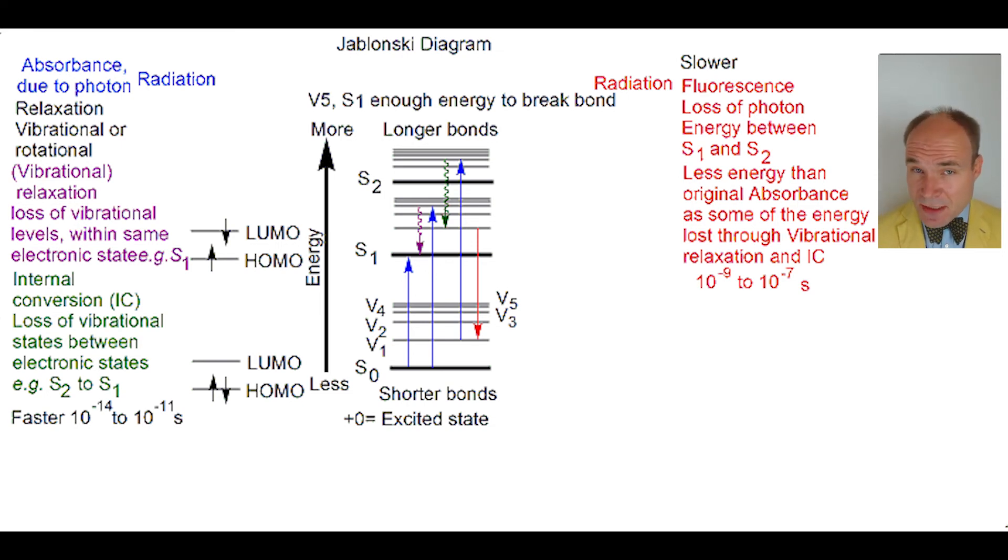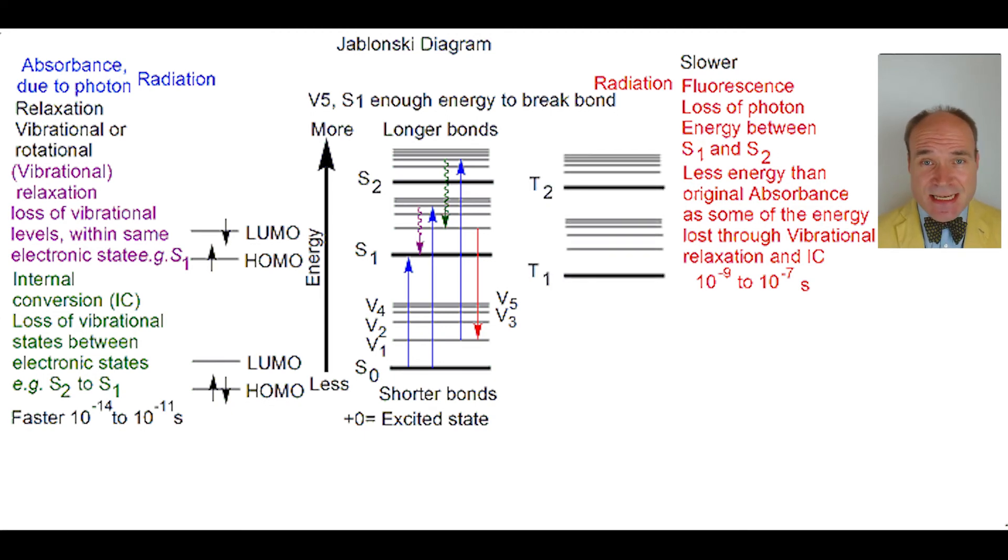Another possible electronic state, other than singlet state where the electron spin states are opposite to one another, is the triplet or T state where the electron spin states are the same. T1 is of lower energy than S1, and thus T1 is more stable than S1.